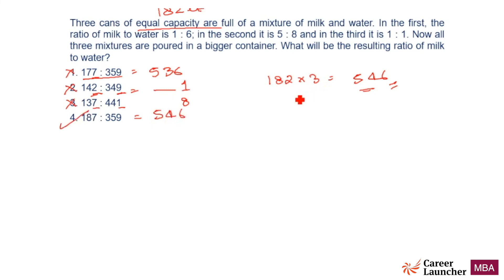So you could have done the question earlier by using this concept that if it is 182 liters, 182 into 3 is what I am looking for. So the sum of both the numbers should be 546 or a factor of 546.